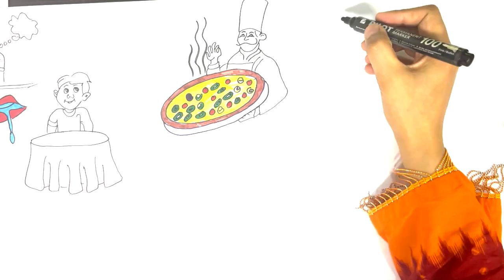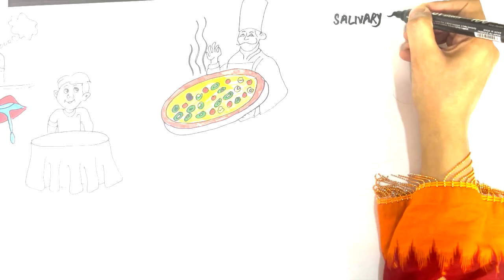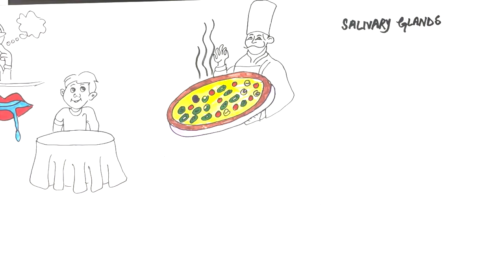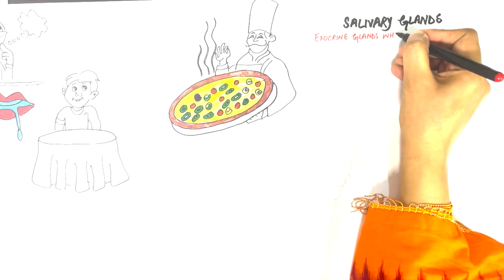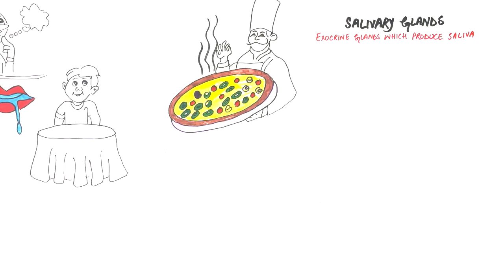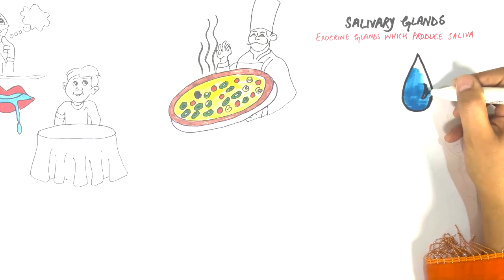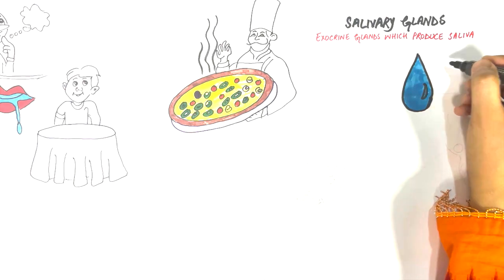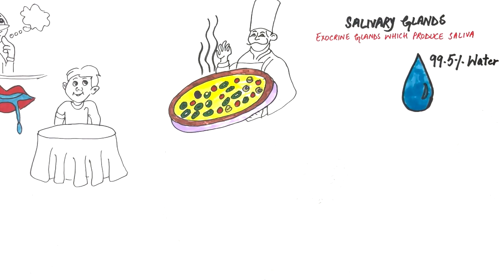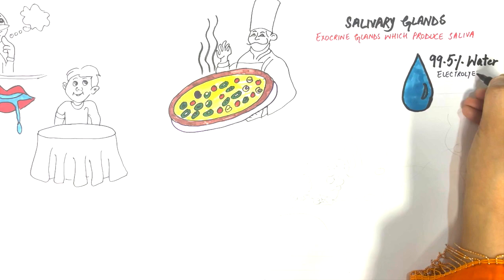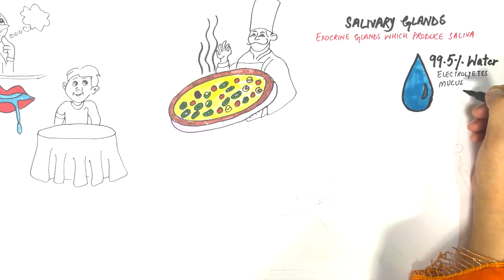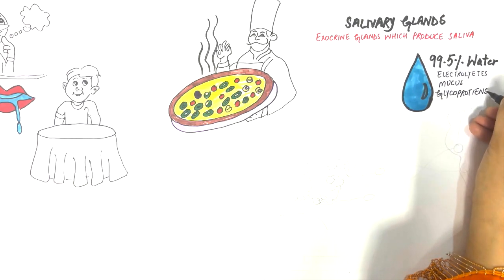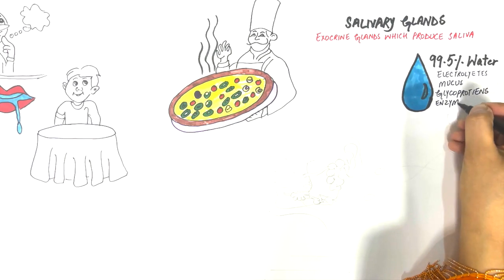Salivary glands, as the name suggests, are exocrine glands which produce saliva. The human salivary glands produce about one to one and a half liters of saliva per day. Saliva contains 99.5% water, and the rest is composed of electrolytes, mucus, glycoproteins, enzymes, and antibacterial compounds.